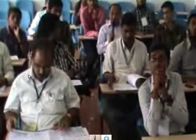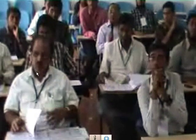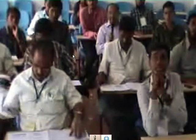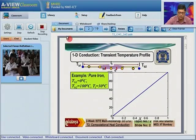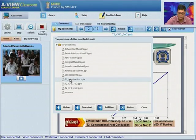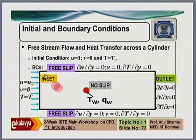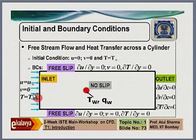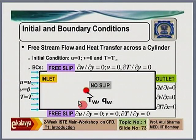Please refer to topic number 1, slide number 73. The question is whether the flow is along the axis of the cylinder or in the theta direction. The flow direction is horizontal. The inlet flow is horizontal, although when it reaches close to the cylinder it moves up and down and develops velocity components in the angular direction, but the inlet velocity is horizontal.